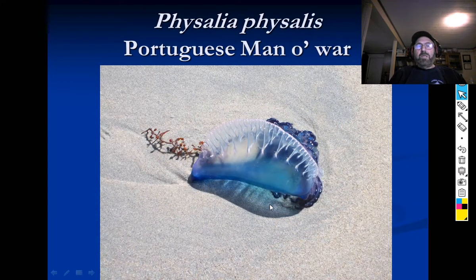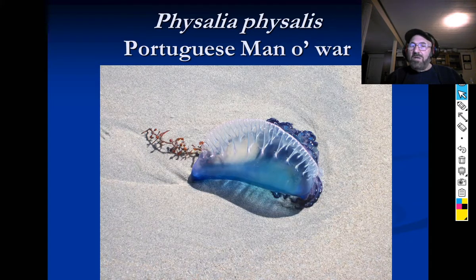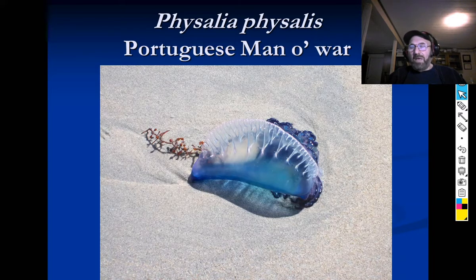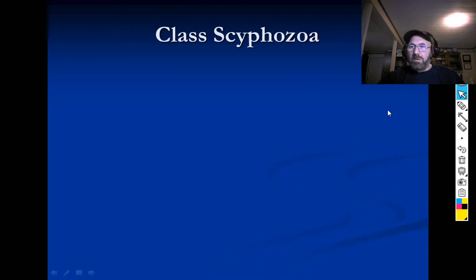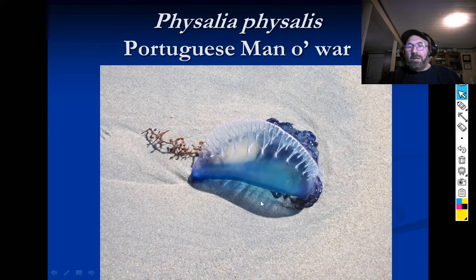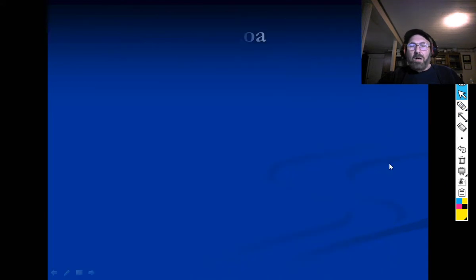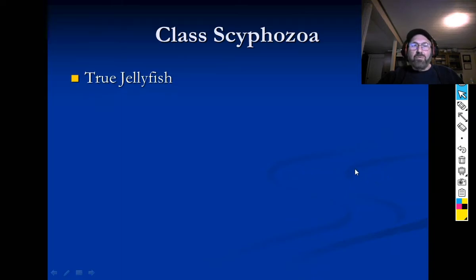Here's another great example of a cnidarian that most people think of as a jellyfish — but it's not. This is the Portuguese Man o' War, a hydrozoan common in the tropics. It's actually a colony, not a true jellyfish. One individual polyp is this one, another is that one, and the other polyps hang down below.